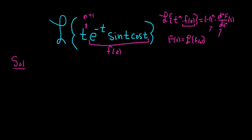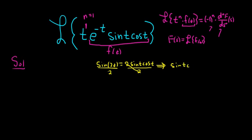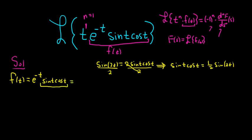To compute this Laplace transform, we have to deal with the sine t cosine t. Recall that sine of 2t equals 2 sine t cosine t. Dividing both sides by 2 gives sine t cosine t equals one half sine 2t. So our little f, which is e to the negative t sine t cosine t, can be rewritten as e to the negative t times one half sine 2t.